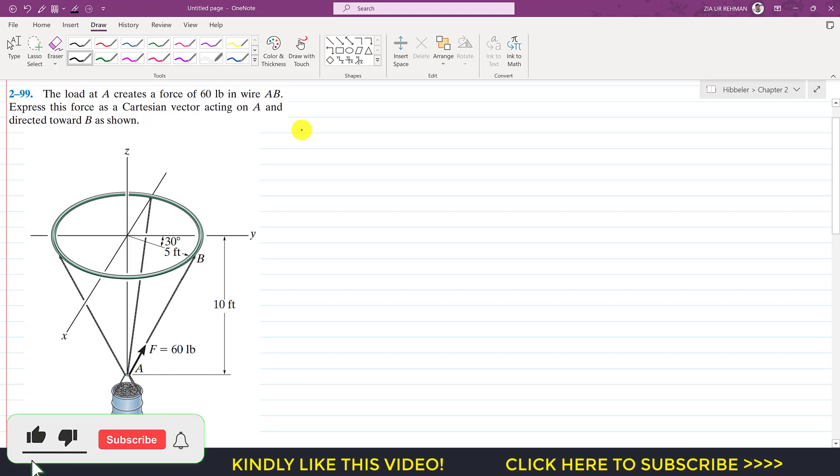Hello students, welcome to Engineers Academy. Kindly subscribe to my channel if you haven't subscribed yet. Now let's solve another problem from statics. The problem says that the load at A creates a force of 60 pounds in wire AB.